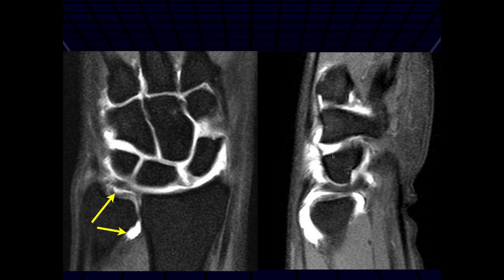On the sagittal sequence, we're just seeing that horizontal cleft through the radial disc. And there's a vertical component right there too.